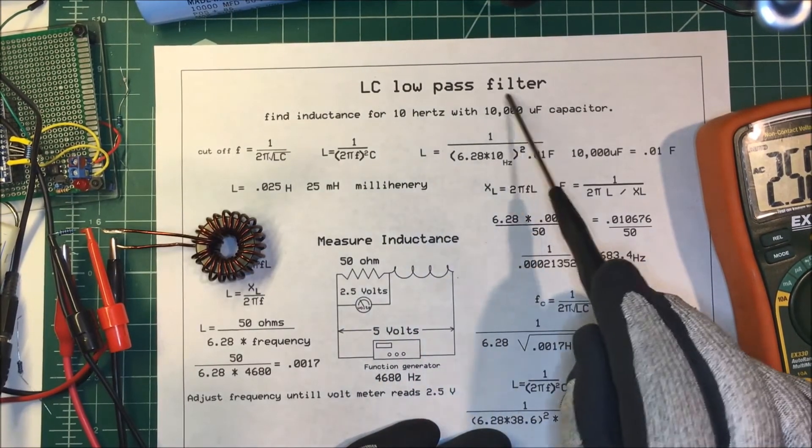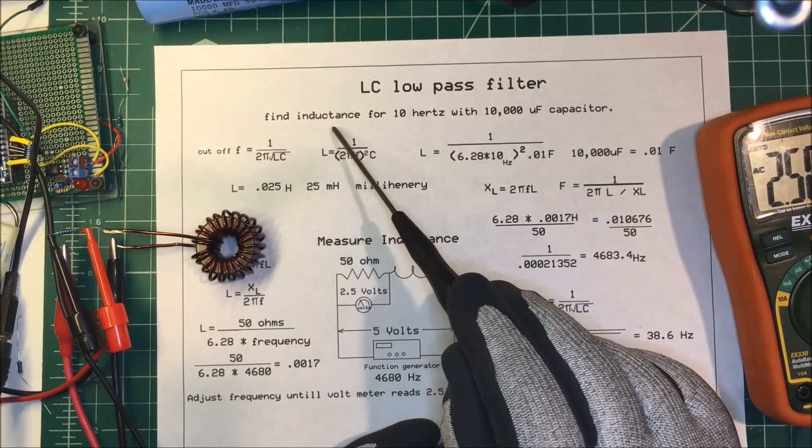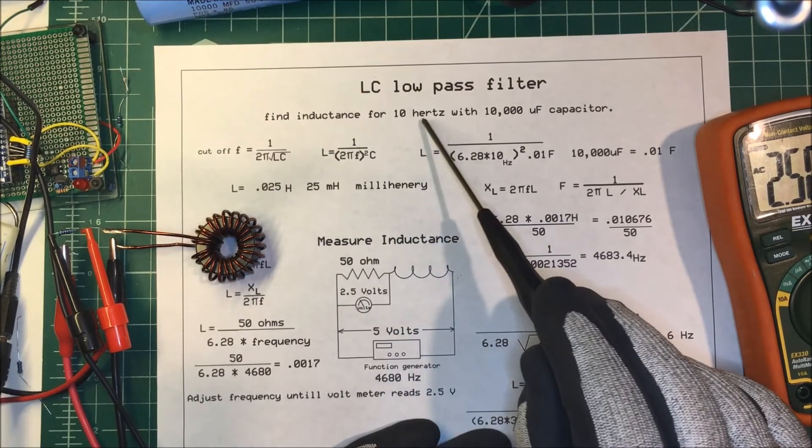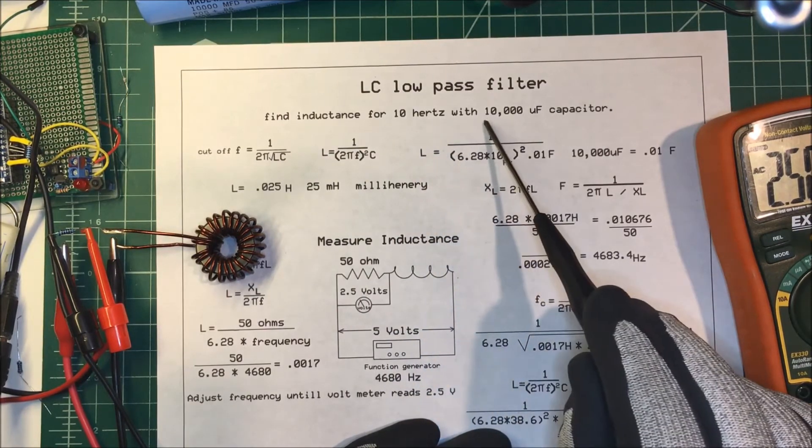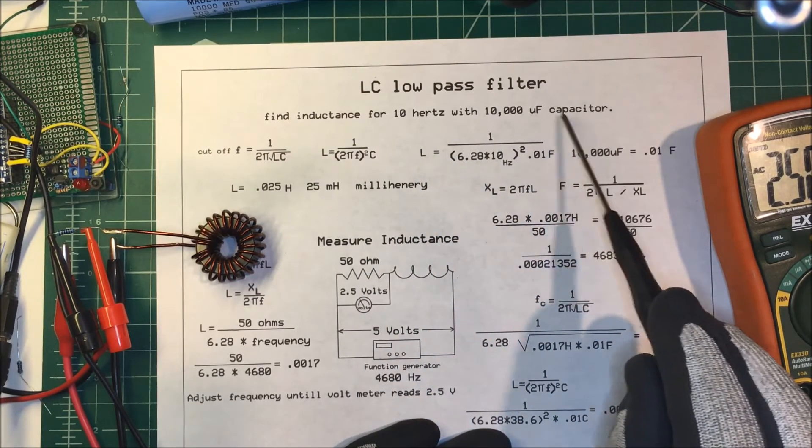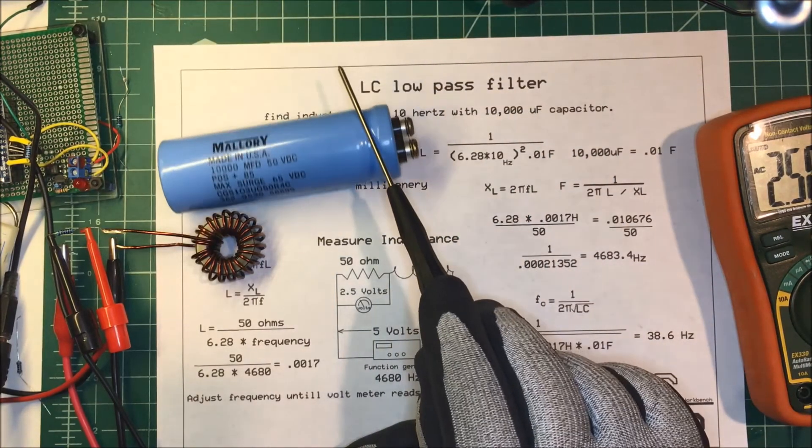Let's talk about the LC low-pass filter. I need a low-pass filter that has a cutoff frequency of about 10 hertz, and I'm going to use a 10,000 microfarad capacitor.